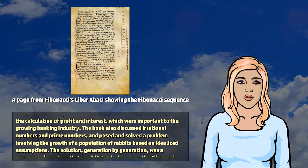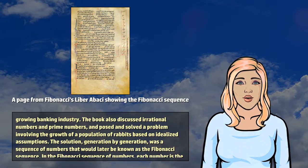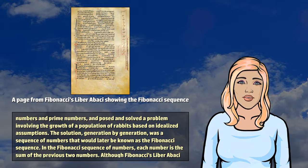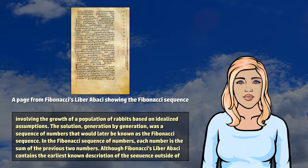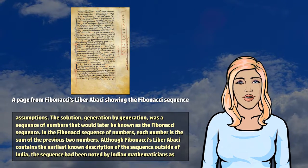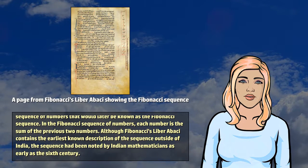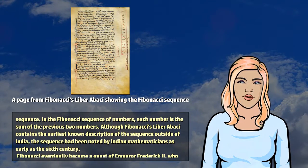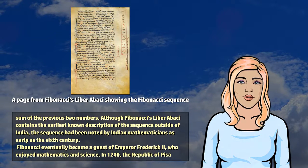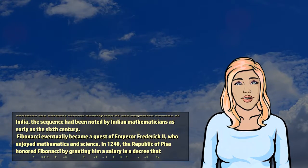The book also discussed irrational numbers and prime numbers, and posed and solved a problem involving the growth of a population of rabbits based on idealized assumptions. The solution, generation by generation, was a sequence of numbers that would later be known as the Fibonacci sequence. In the Fibonacci sequence of numbers, each number is the sum of the previous two numbers. Although Fibonacci's Liber Abaci contains the earliest known description of the sequence outside of India, the sequence had been noted by Indian mathematicians as early as the 6th century.